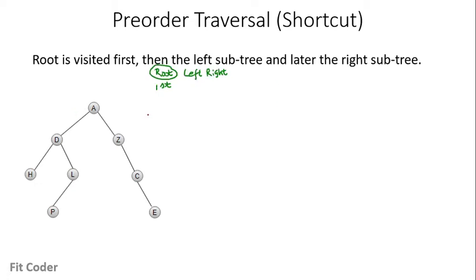Before starting the traversal, we need to replace the null children with some marker nodes. H has two null children — left and right — so we draw two marker nodes. P also has two null children. L has one right child which is null, so we draw one marker node. Z has one left child null. C also has a left child null. And E has both children null. These marker nodes are drawn wherever a child was null, to ensure every node has two children.